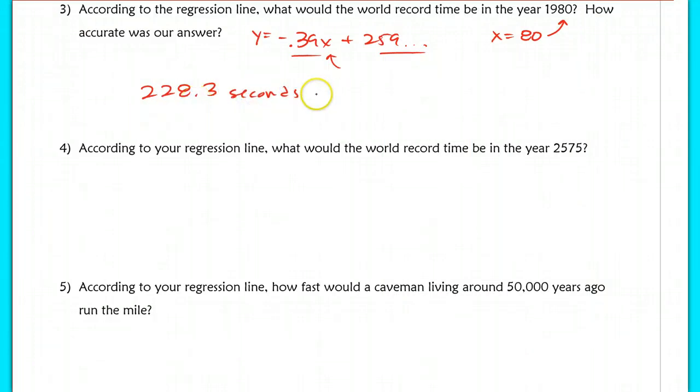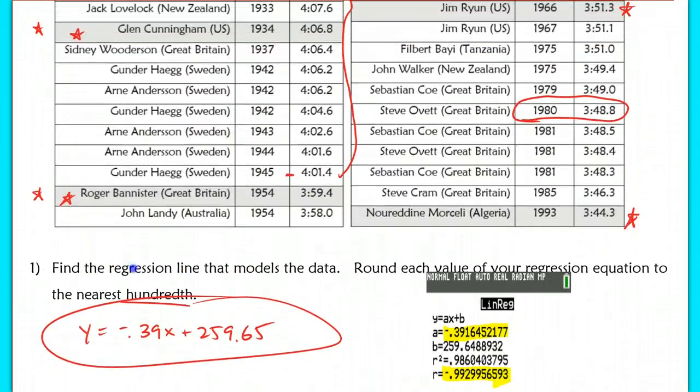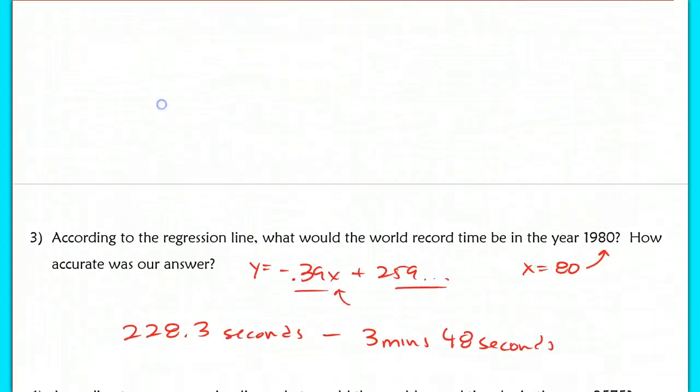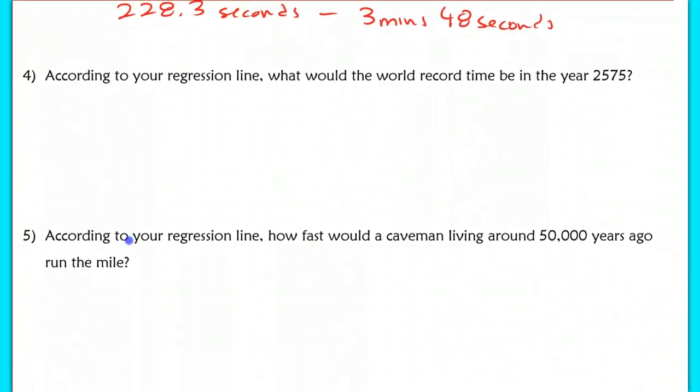Now this value is about 3 minutes and 48 seconds. I want to go back to my table and see how accurate that actually was. And I can see if I go to 1980 here, that is actually right on the money. 3 minutes and 48 seconds. It's pretty much exact, same exact value that we would get. Now, the next question, though, I'm actually going to change this value slightly, and let's make that 2555. So we're going to do it in the year 2555 instead of 2575. But we want to know what the world record time will be in this particular year. So it's still the same idea where you have an input.